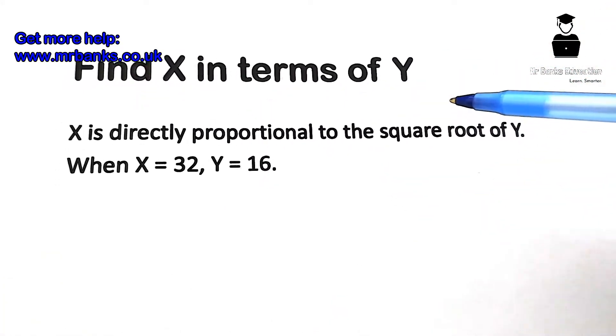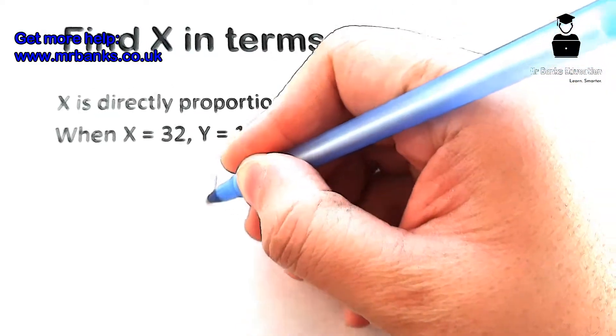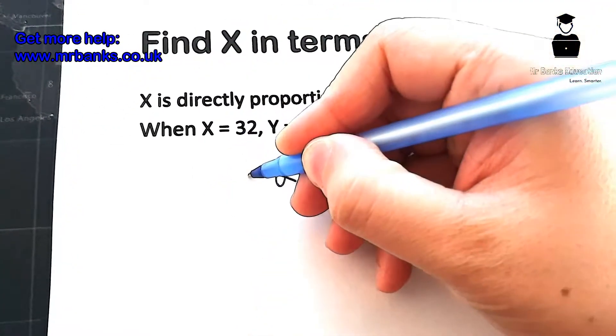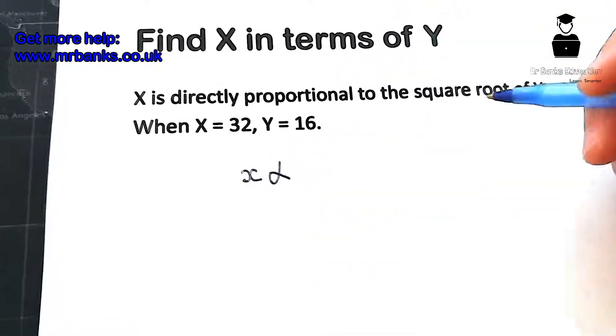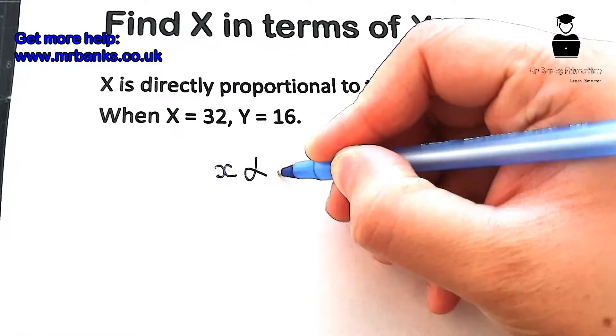It's directly proportional, so we use this sign here. And then X is directly proportional to the square root of Y. Square root of Y, we write like this.